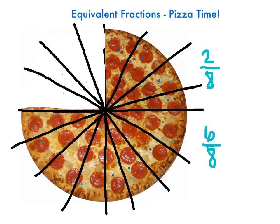I'm going to go back and count: one, two, three, four, five, six, seven, eight, nine, ten, eleven, twelve, thirteen, fourteen, fifteen, sixteen. You'll notice I counted those pieces that Rebecca ate, because we want our whole to stay the same. We still want the whole pizza to be our denominator on the bottom. So we no longer have eight slices — now our whole is sixteen slices.